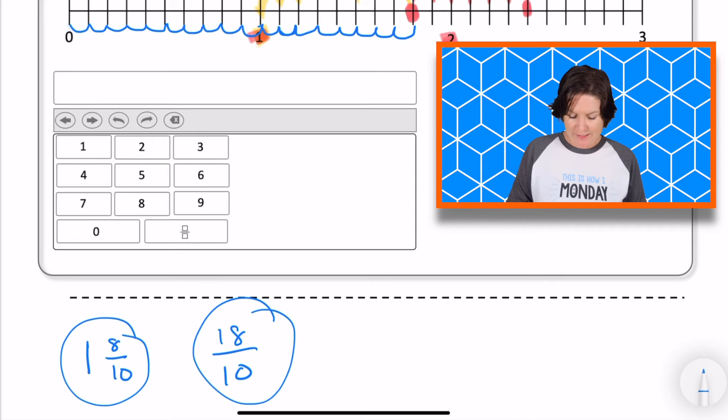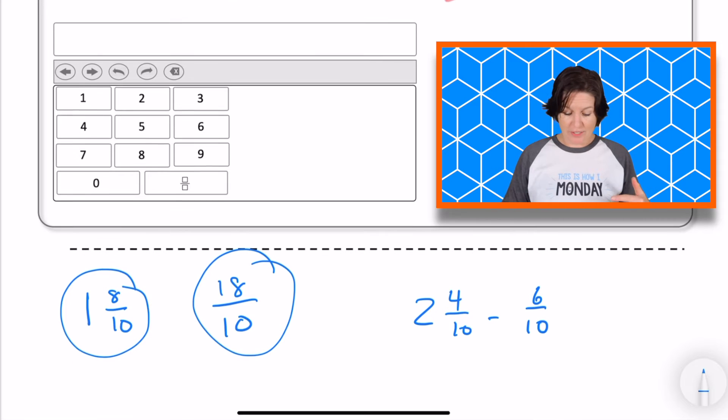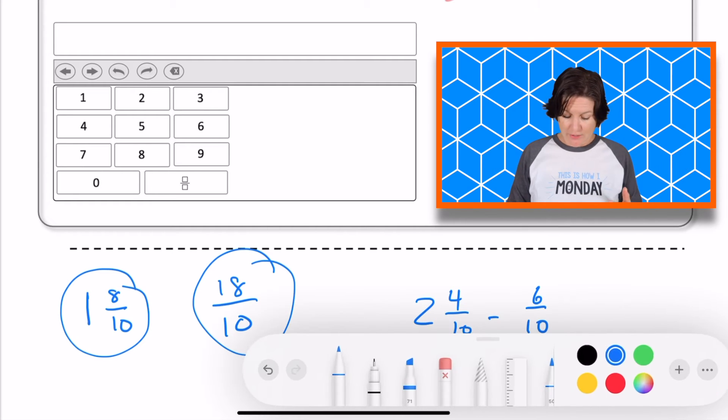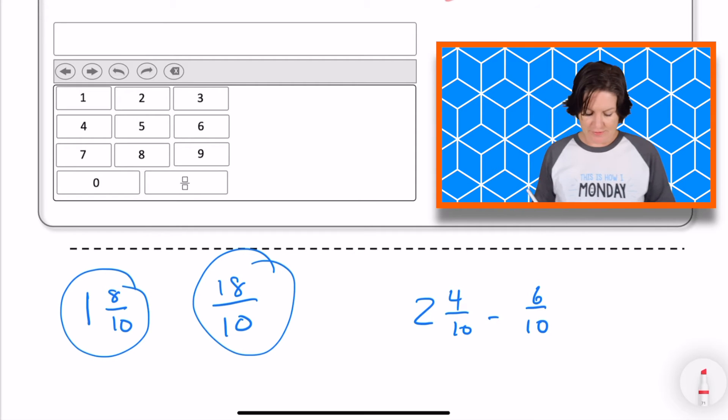You may have solved this by subtracting two and four tenths minus six tenths on your paper. That's totally okay too, but if the number line is provided, why not use it? And you can just point on your screen and carefully count as you go back. So I did all the work. I need to make sure that I input the correct answer here, which there's two answers that I could put in. I'm going to put in, hmm, I think I'm going to choose the mixed number of one and eight tenths.